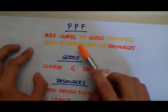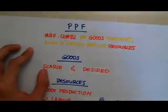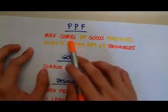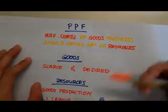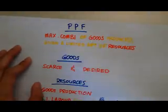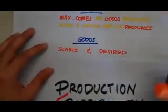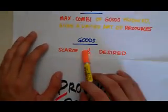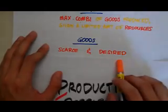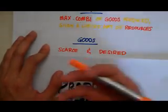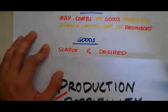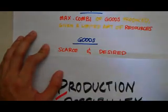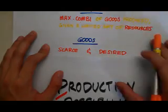We've got three keywords here: maximum combination, goods, and resources. Let's break that down into proper definitions. Take a look at goods — goods are whatever that is scarce and desired. An economic good must have these two properties. Scarce basically means that it's limited in supply, and desired means that it is demanded by a market or by a certain population.